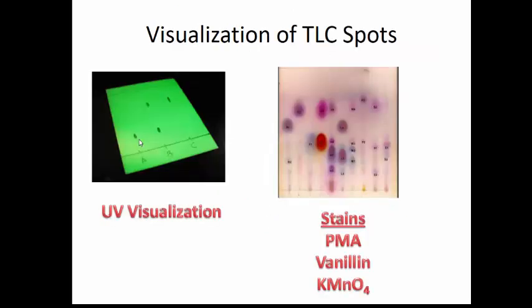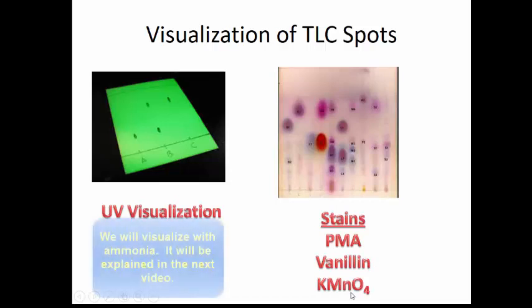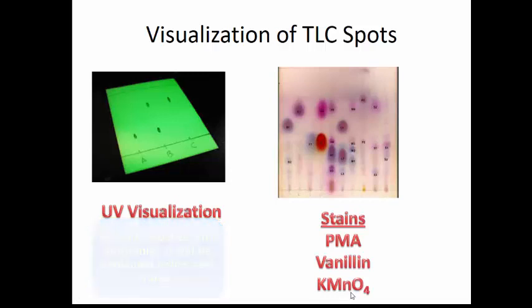Chromatography paper and TLC plates can be visualized in several ways: UV visualization, stains like phosphomolybdic acid (PMA), vanillin, or potassium permanganate. In this paper chromatography experiment, we're going to visualize using ammonia vapor.